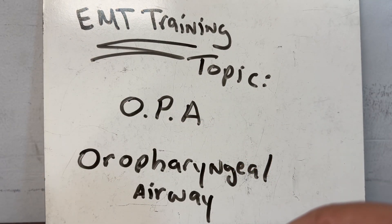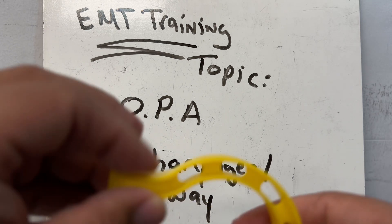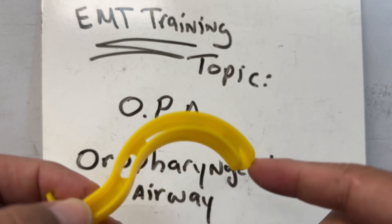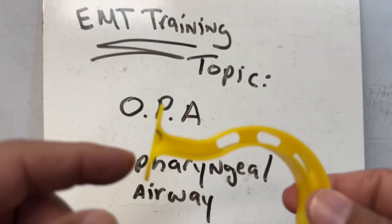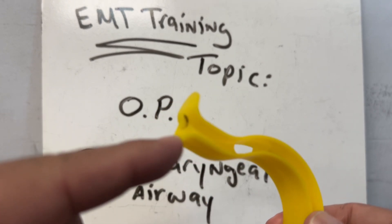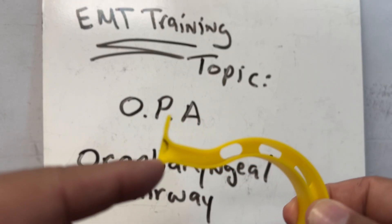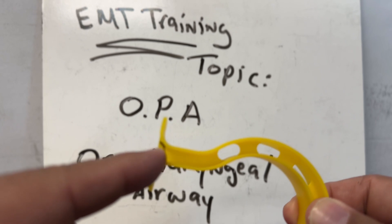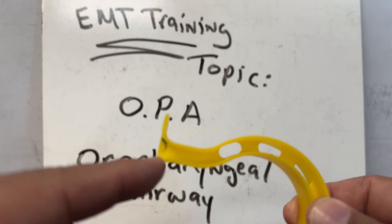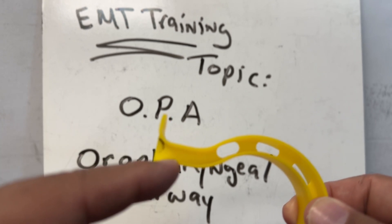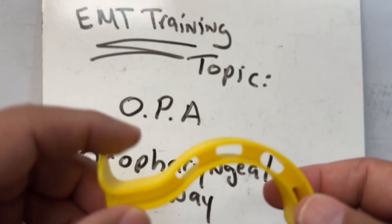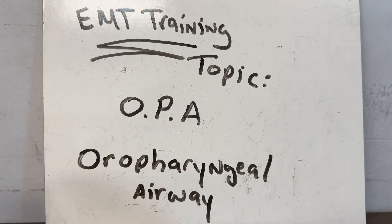This is the tip of the OPA. On the other end is the flange, which should rest on the patient's teeth or mouth. The insertion technique will be shown in the next video.